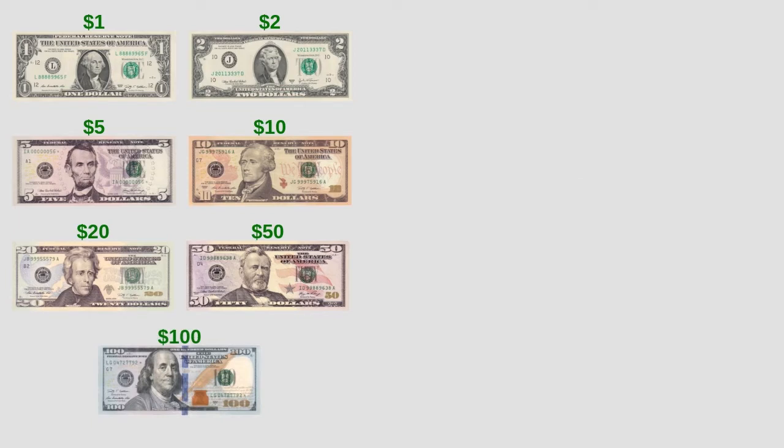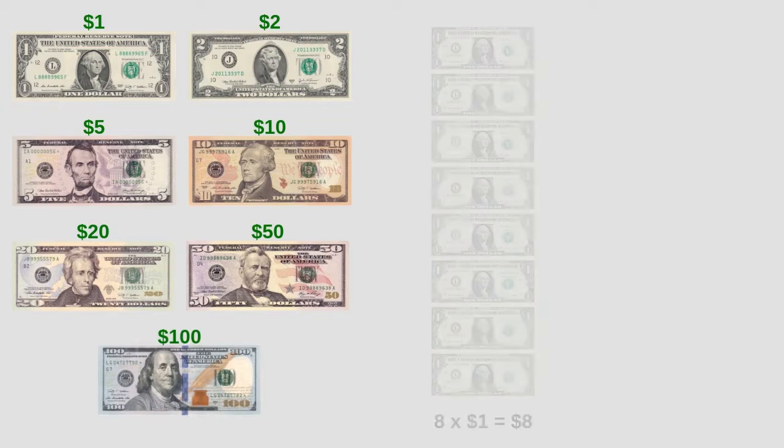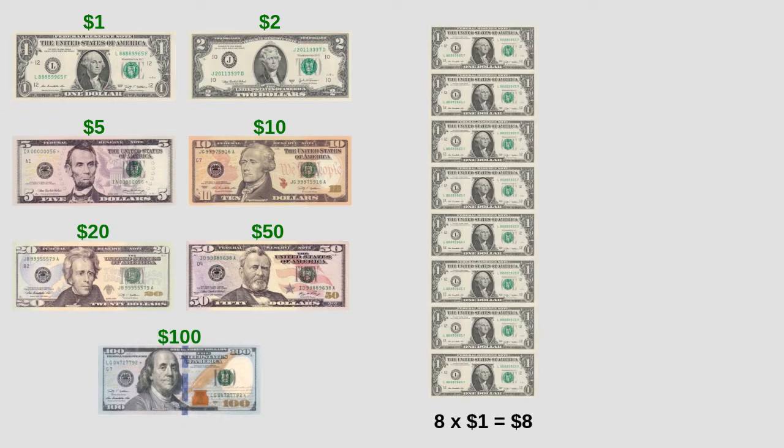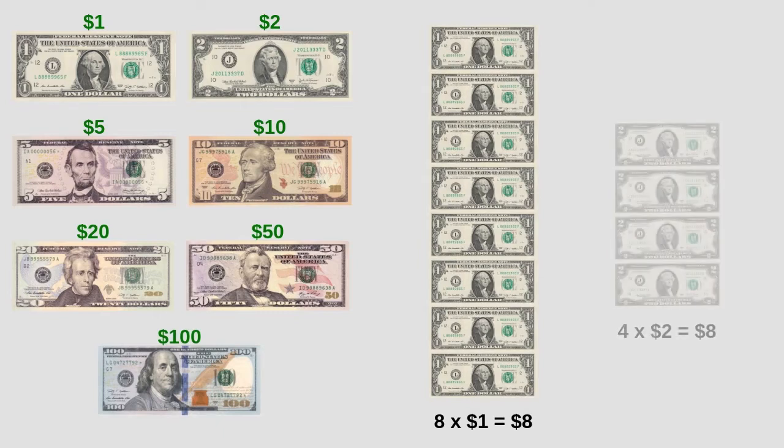We can have the same amount of money in different denominations. For example, we can have eight dollars in eight one-dollar bills, or in four two-dollar bills.